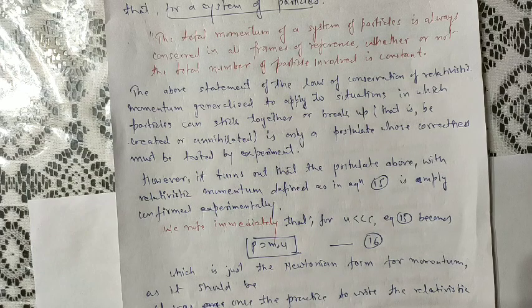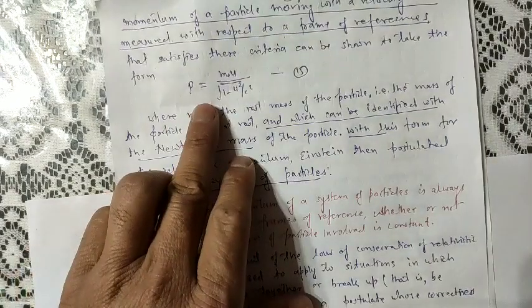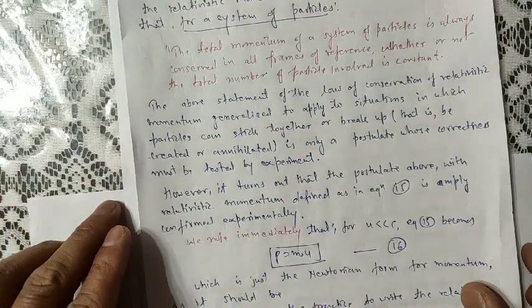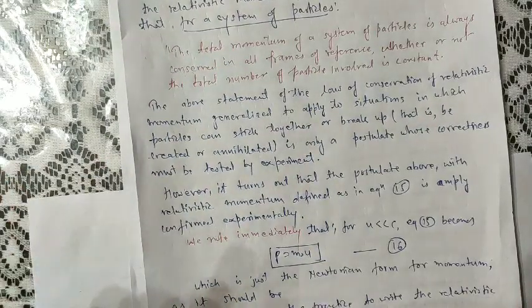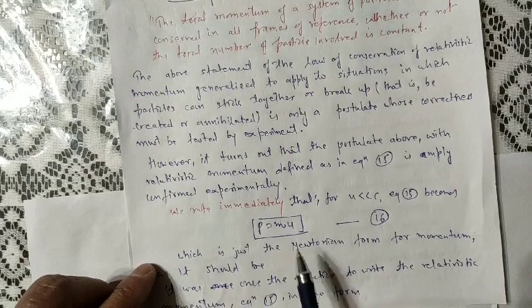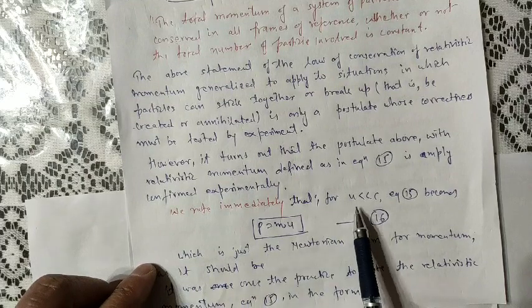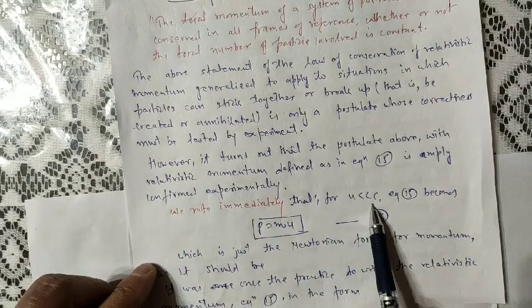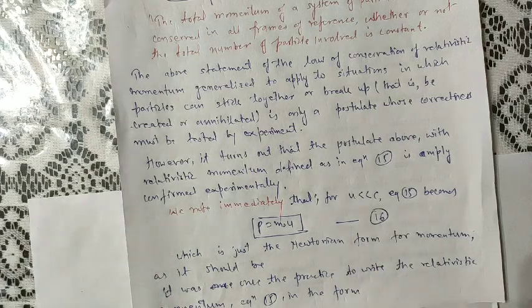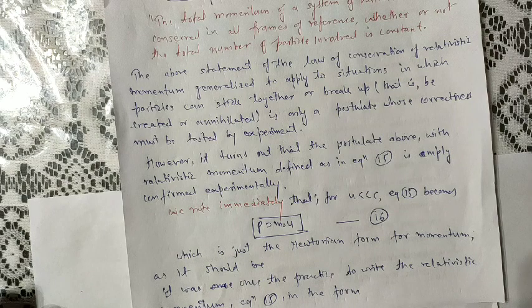For the limiting case where u is very much less than c, the denominator reduces to one, and equation 15 reduces to the Newtonian form of momentum, p = m₀u, as it should. This confirms that the second criterion is satisfied.